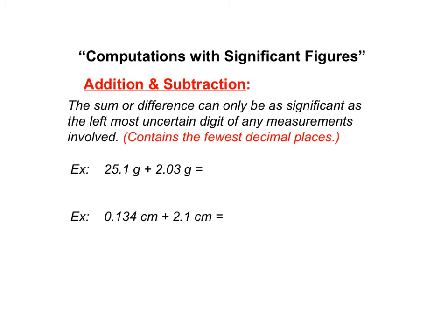Now let's do math with significant figures. For adding and subtracting, we want to use the fewest decimal places. This number has one decimal place, this number has two decimal places. The fewest amount is one, so my answer should only have one decimal place.